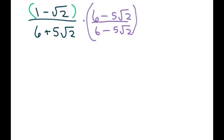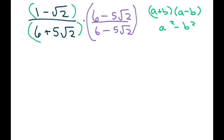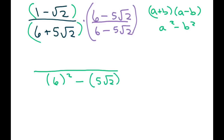For the denominator, it has the form of a plus b times a minus b, and we know that's a squared minus b squared. So for the denominator, I'm going to square my a, which is 6, put the minus, and then square my b. That's going to equal 36 minus — 5 squared is 25, times the square root of 2 squared is just 2, so it's going to be 50. That equals 50.